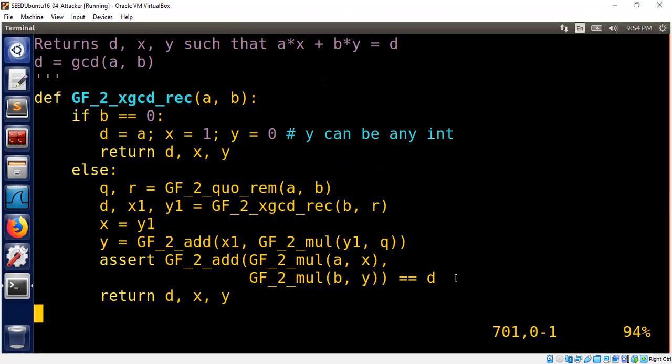But I have quote unquote ported this concept to Galois field. All I did is just essentially replace mod by a Galois field remainder operation, addition by Galois field addition, multiplication by Galois field multiplication. That's all.